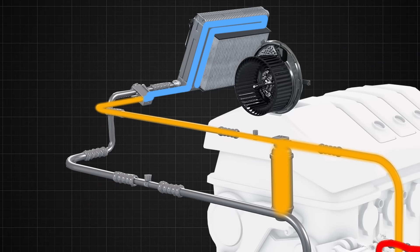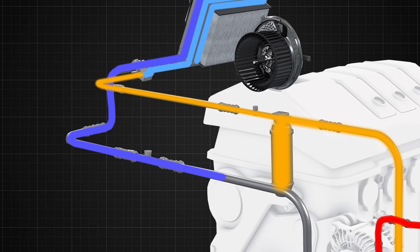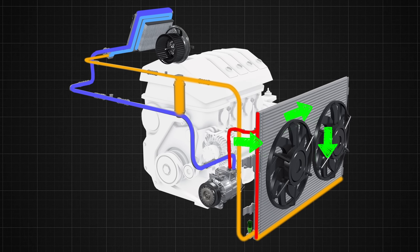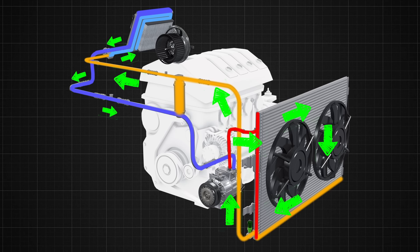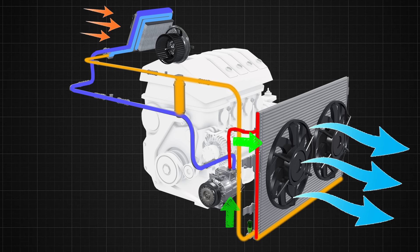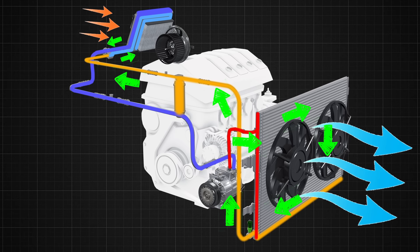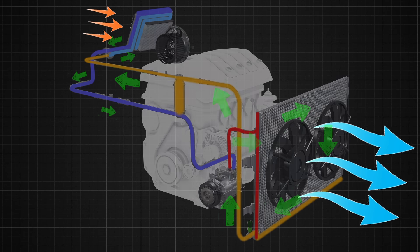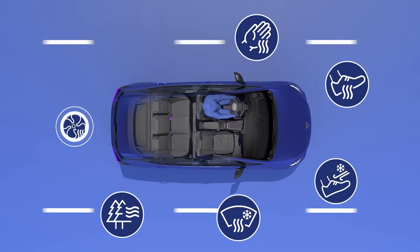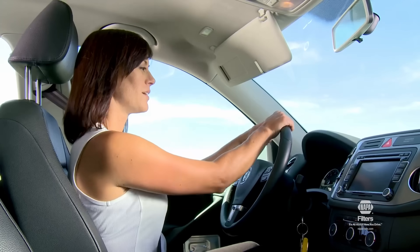The refrigerant, now in gaseous form, exits the evaporator and flows back to the compressor. The compressor receives the low-pressure gas, compresses it, and sends it to the condenser again, and the process repeats. The cycle continues as long as the AC system is on and the blower fan is operating — with the evaporator absorbing heat from the cabin air, the condenser releasing heat to the outside air, and the expansion valve controlling refrigerant flow between the two. This continuous cycle allows the AC system to maintain a comfortable cabin temperature and humidity level while the vehicle is in operation.